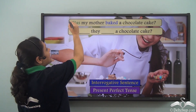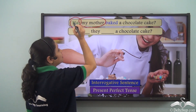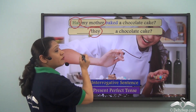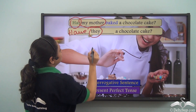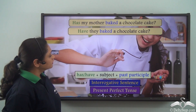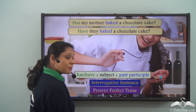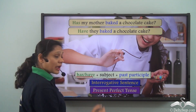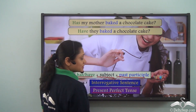We have used 'has' in this sentence because our subject is singular - 'my mother'. If we change the subject to plural 'they', we will write: Have they baked a chocolate cake? So in the interrogative sentence portraying the present perfect tense, the sentence form can be 'has' or 'have' followed by the past participle.